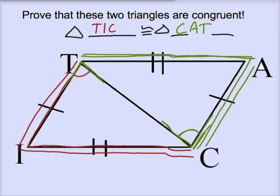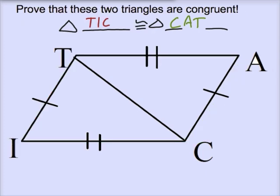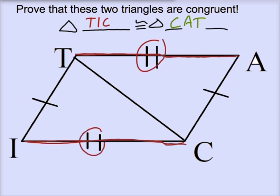Well, let's take a look at those congruence marks again. I see I've got one pair of segments. Let's call this I, C. I, C and A, T must be congruent because they both have these two pairs of congruence marks on them. And likewise, this segment T, I is going to be congruent to segment A, C.